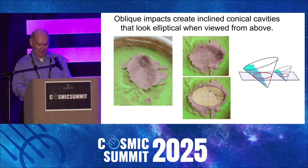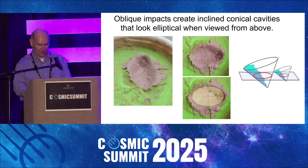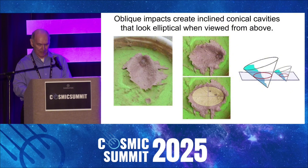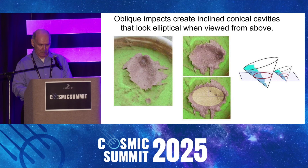Ellipses are conic sections, which implies that the Carolina Bays and the Nebraska basins originated as inclined conical cavities or penetration funnels. The impact of a projectile displaces material and forms uplifted rims around the cavity. Experimental oblique impacts by ice projectiles produce inclined conical cavities that look elliptical when viewed from above.